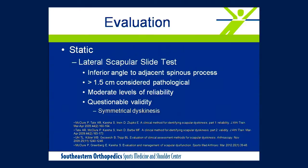The interrater reliability of the lateral scapular slide test is moderate, but its validity is questionable — particularly if someone has bilateral scapular dyskinesis, the distance will be the same and they won't be flagged. One study of 71 asymptomatic Division I collegiate baseball players found that 52 of them had a distance greater than 1.5 centimeters, making it unlikely they all had scapular dyskinesis. Additionally, it's a static evaluation, so it tells us nothing about dynamic muscle activation.